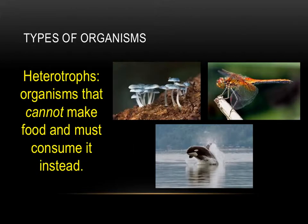Organisms are classified by how they obtain food. Heterotrophs cannot make their own food and must consume it instead. These include animals, fungi, and certain bacteria and protists. Because heterotrophs eat or absorb their nutrients from other sources, they're also known as consumers. You are a heterotroph.